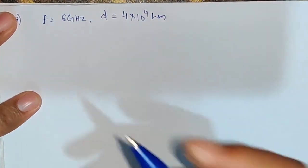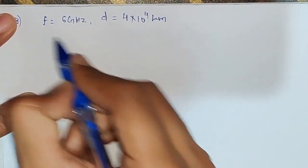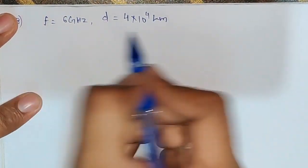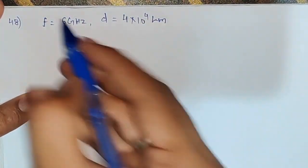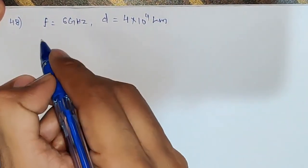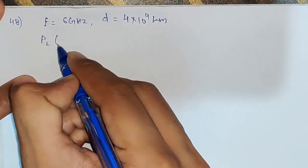The distance is given as 4×10⁴ kilometers. The question asks for the answer in dB. Since ISRO calculators are not allowed, you need to remember one formula, and that is path loss in dB.